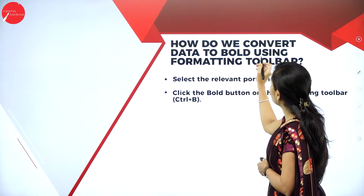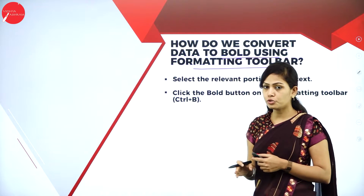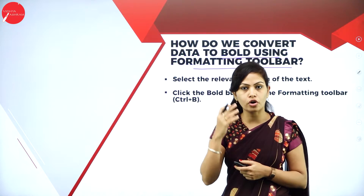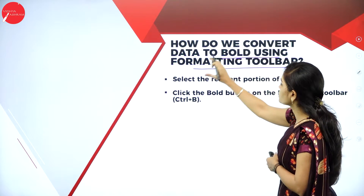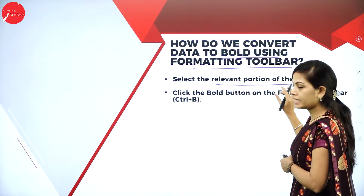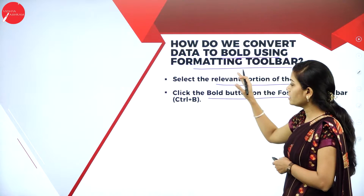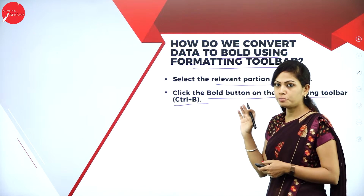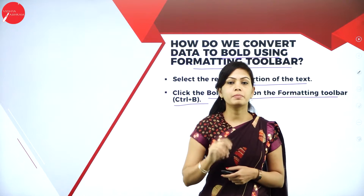How do we convert data to be bold using the formatting toolbar? Very important question. Already I have discussed about the formatting toolbar. In the formatting toolbar, you can change your text to bold, italic, underline, and you can change the font size, font colors, highlight the text, etc. Steps: select the relevant portion of the text first, then click the bold button on the formatting toolbar. You can use Ctrl+B, or you can go to the formatting toolbar and click B. So we have two options to convert data to bold.